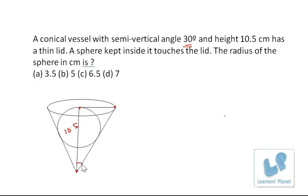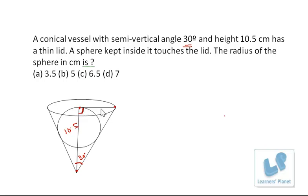What is the semi-vertical angle? This angle here is 30 degrees. You can see this right-angle triangle — this is perpendicular because this is the radius, and this is the height, so the angle between the two is 90 degrees. Using these two, we can find out the radius and the hypotenuse of this right-angle triangle. The perpendicular of this triangle is nothing but the radius of the cone.